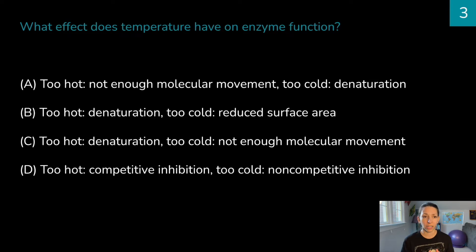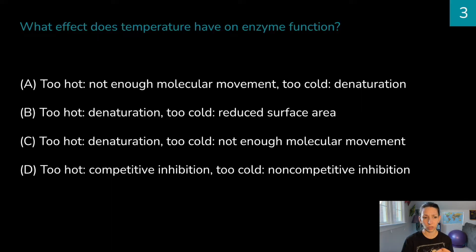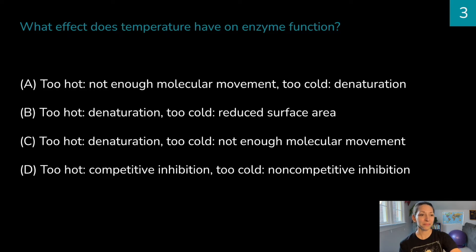What effect does temperature have on enzyme function? The options are: A — too hot, not enough molecular movement; too cold, denaturation. B — too hot, denaturation; too cold, reduced surface area. C — too hot, denaturation; too cold, not enough molecular movement. Or D — too hot, competitive inhibition; too cold, non-competitive inhibition. The correct answer is C.